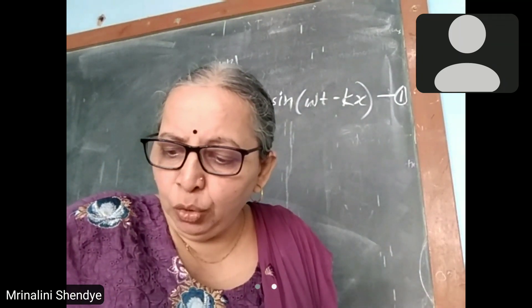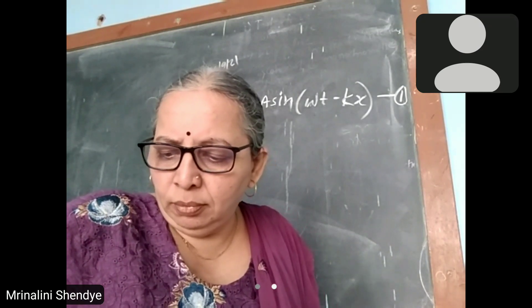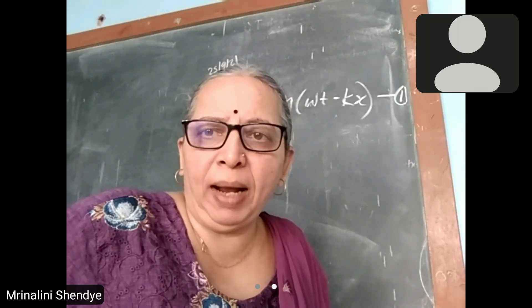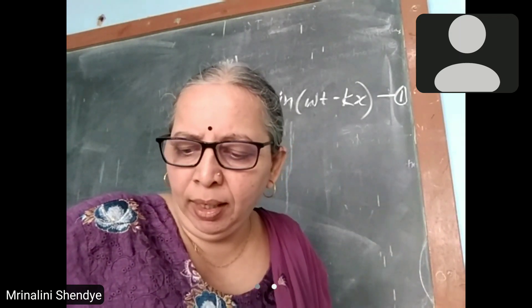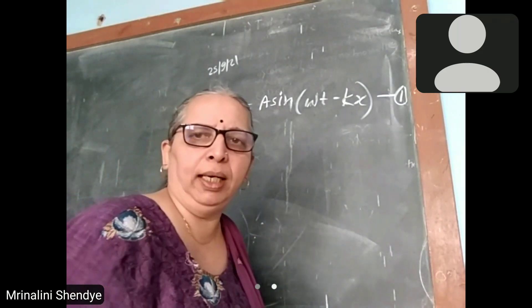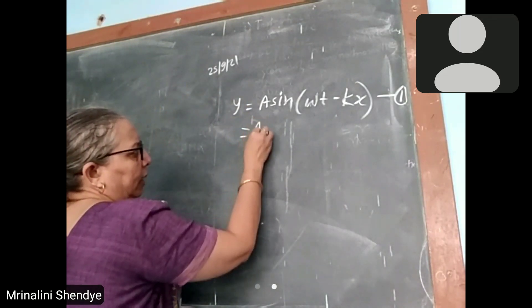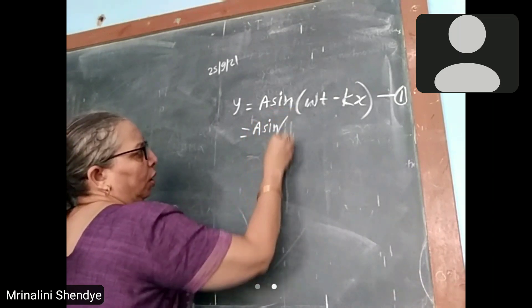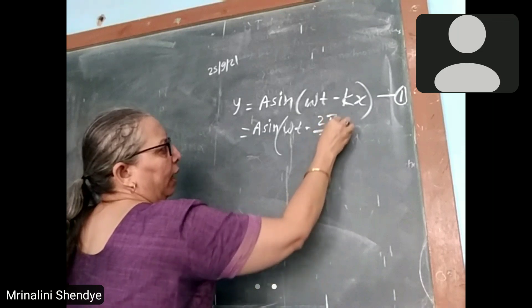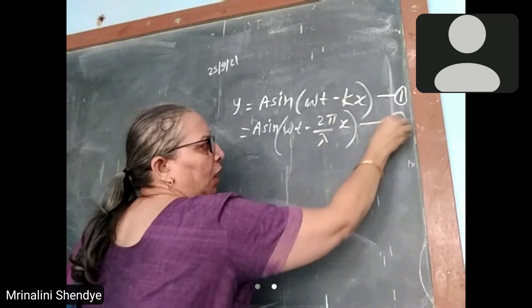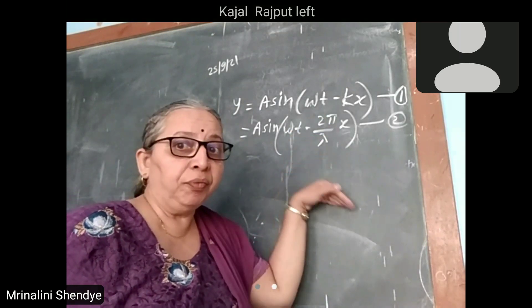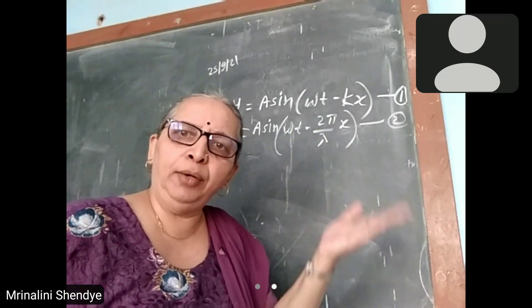But you know k as a function of lambda, 2 pi by lambda, this value for k we use, called wave number. In another form, I could write the same: a sin omega t minus 2 pi upon lambda x. We are representing the same equation in terms of different constants related with the wave, where lambda is wavelength of the wave.